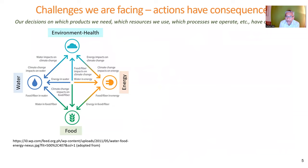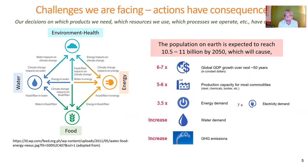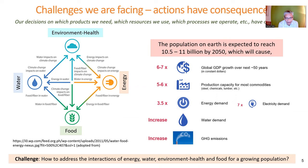The next challenge is that actions have consequences. Our decisions on which products we need, which resources we use, and which processes we operate affect water, energy, food, environment, and health on Earth, as shown by the Nexus diagram. For a growing population over the next 50 years, global GWP will need to increase, requiring more energy, electricity, and water, resulting in increased greenhouse gas emissions. The challenge is how to address the interactions of energy, water, environment, health, and food.